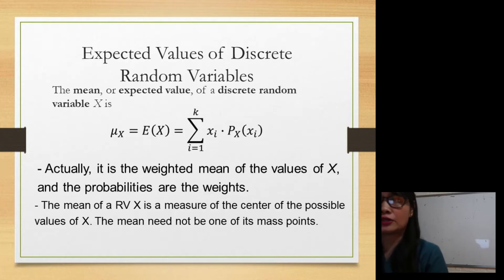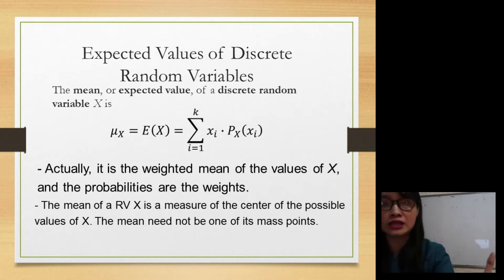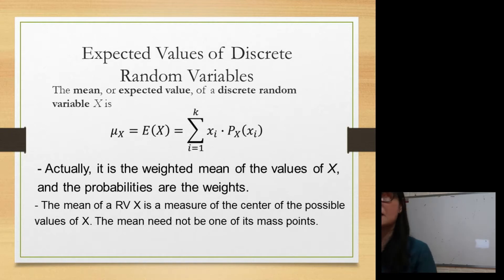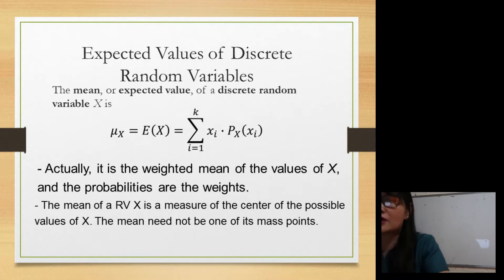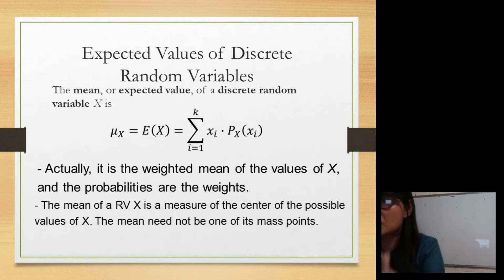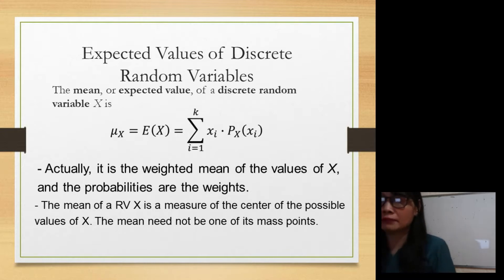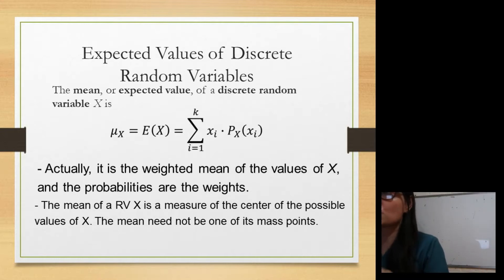The mean or expected value — another term for the mean is expected value — of a discrete random variable x is: mu sub x is equal to the summation of x, meaning you simply get the product of its value and its corresponding probability. It's the same as how we get the mean from our previous discussion. To solve for the expected value or the mean, just get the product of your value and its corresponding probability.